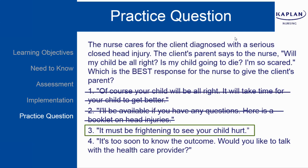The correct approach involves communicating without judgment, without giving advice, with active listening, giving information, and allowing silence for the parent to fill in — giving them space to express how they're feeling. Answer D is not correct because it's too soon to know the outcome, and saying you'd like to talk with the healthcare provider is passing the buck rather than engaging directly with the parent.